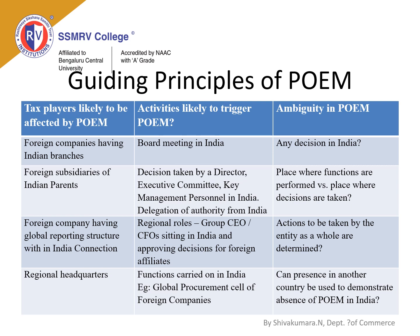A set of guiding principles for Place of Effective Management (POEM) determination is proposed to be issued. These guiding principles are based on: tax places likely to be affected by POEM, activities likely to trigger POEM, and ambiguity in POEM. In cases of ambiguity, it depends upon the situation. In the case of foreign companies having Indian branches, the board meeting should be held in India or any decision should be taken in India — in that situation it should be a resident company, otherwise a non-resident company.